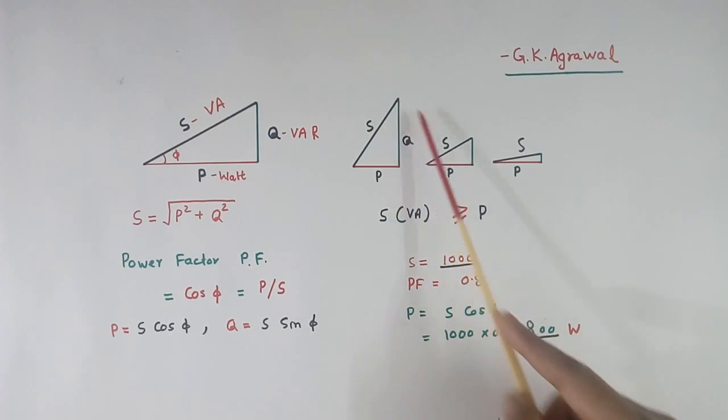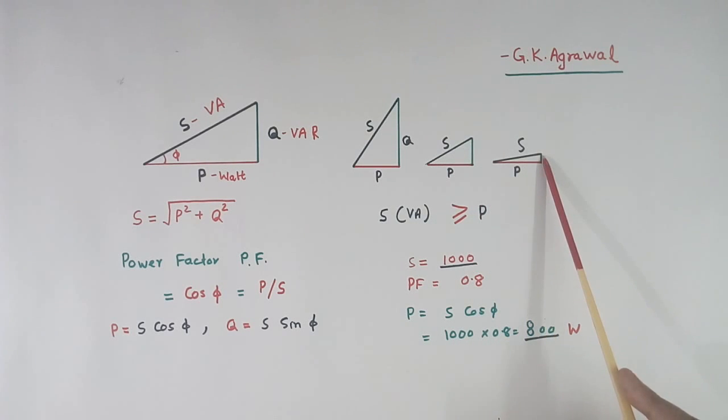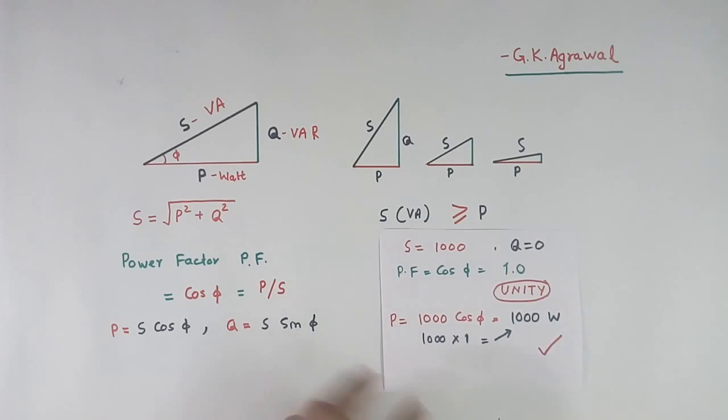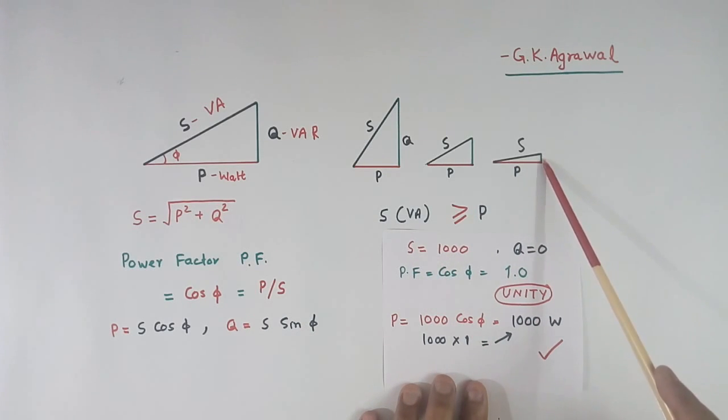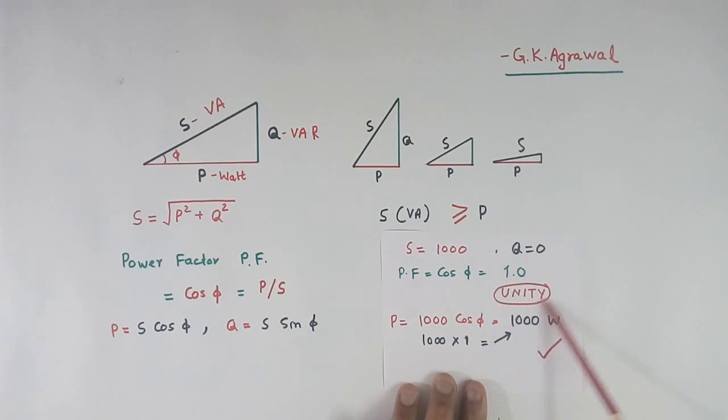Now I have shown here three cases. In all three cases P is equal. If we reduce Q, value of S is coming down. Here Q is further reduced, the value of S comes down further. This is almost equal to P. Now suppose we reduce Q further, we make it 0. So this angle will be 0, so cos phi becomes 1. Now this 1000 with power factor unity, then this power will be equal to 1000 cos phi. Cos phi is 1, so 1000 times 1 equals 1000 Watt. So if Q is 0, this apparent power VA will be equal to active power. Both are equal. This is called the unity power factor.